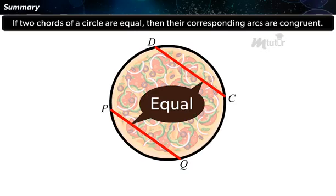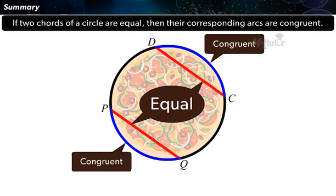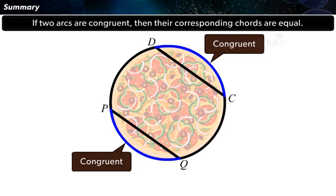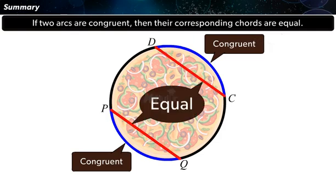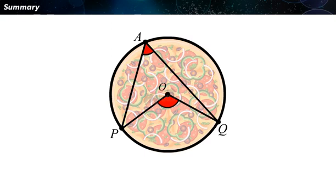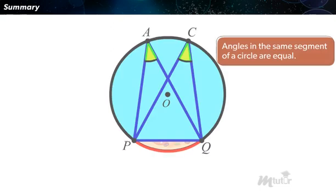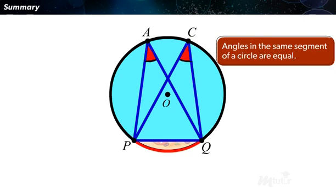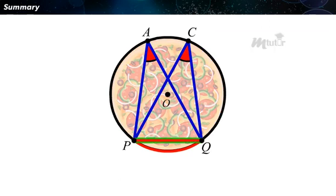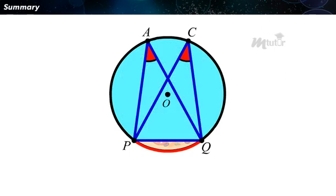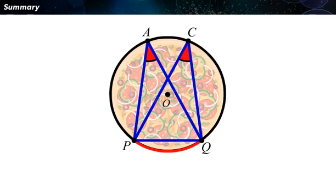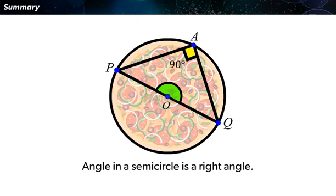Summary: If two chords of a circle are equal, then their corresponding arcs are congruent. Conversely, if two arcs are congruent, then their corresponding chords are equal. The angle subtended by the arc at the center, namely POQ, is double the angle subtended by it at any point on the remaining part of the circle, say PAQ. Angles in the same segment of a circle are equal. If a line segment joining two points subtends equal angles at two other points lying on the same side of the line containing the line segment, the four points lie on a circle. Angle in a semicircle is a right angle.